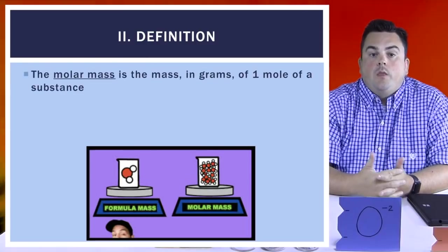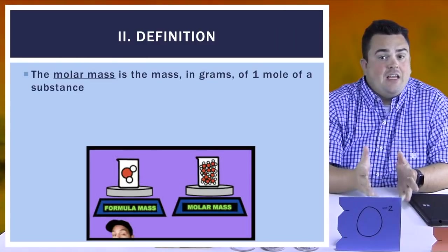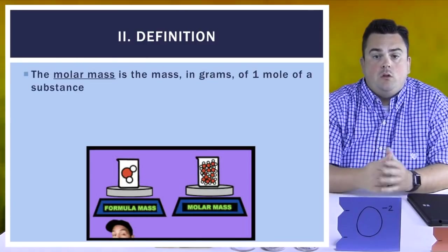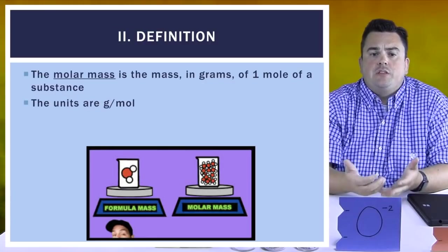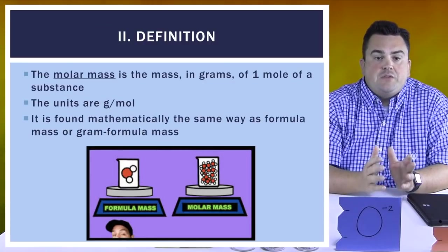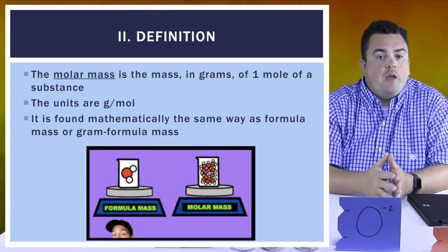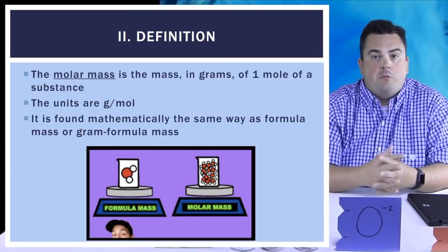Definition: The molar mass is the mass in grams of one mole of a substance. So its units are grams per mole. It is found mathematically the same way as formula mass or gram formula mass. I want you to think of the formula mass as the mass of one molecule or atom, whereas the molar mass is the mass of one mole of that atom or molecule.